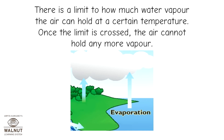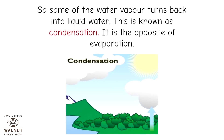There is a limit to how much water vapor the air can hold at a certain temperature. Once the limit is crossed, the air cannot hold any more vapor. So some of the water vapor turns back into liquid water. This is known as condensation. It is the opposite of evaporation.